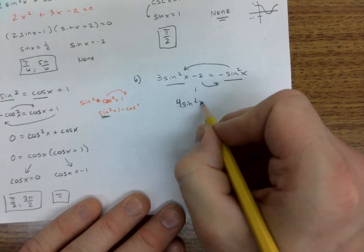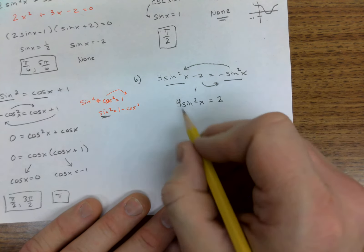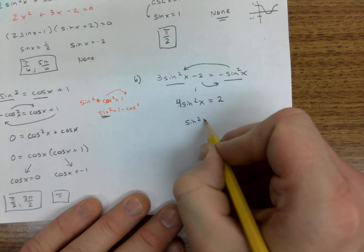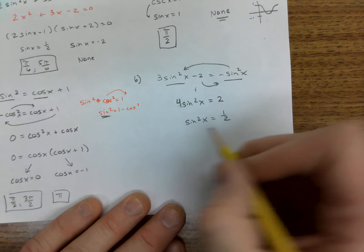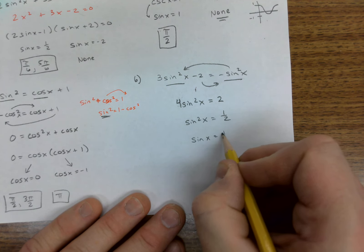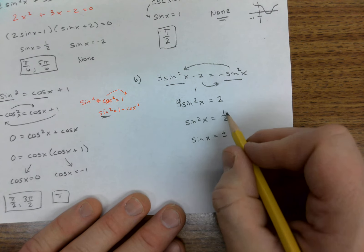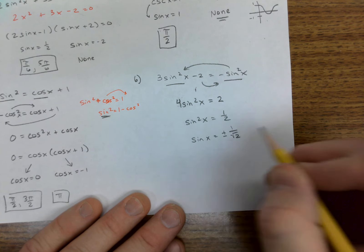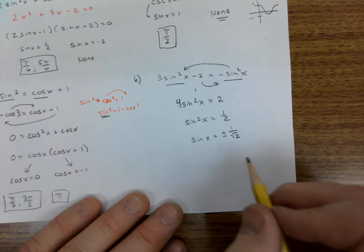Take the square root of both sides. Don't forget about plus or minus. That's 1 over root 2. Don't like roots in the denominator.